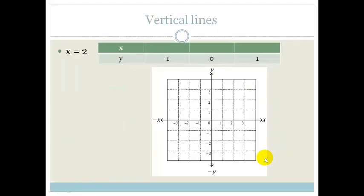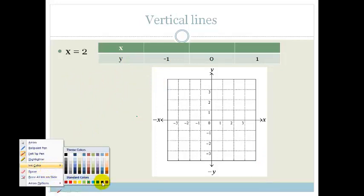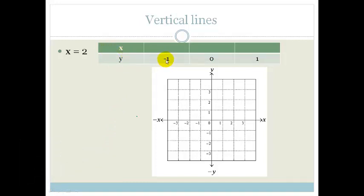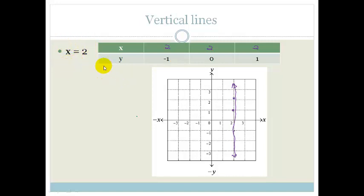Now let's look at vertical lines — for example, x equals 2. When y is minus 1, x is 2. When y is 0, x is 2. When y is 1, x is 2. If we plot this, we can see that x equals 2 always — so this gives a vertical line. Please use a ruler. Notice that this is not the normal y equals mx plus c form; it just tells you that forever, no matter what, x is equal to 2.